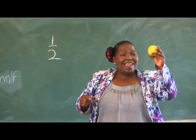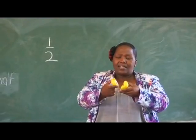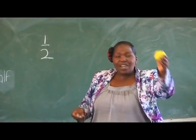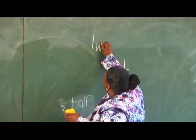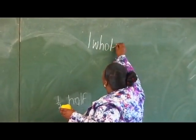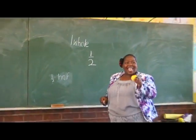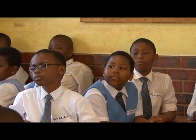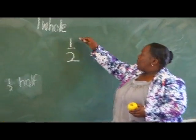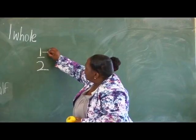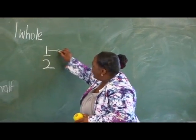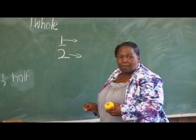We had one apple which was a whole. After writing the fraction half, it is where the learners see that there are two numbers. This half is a fraction. If we have two numbers like this, this is a fraction. This is the top number and this is the bottom number.